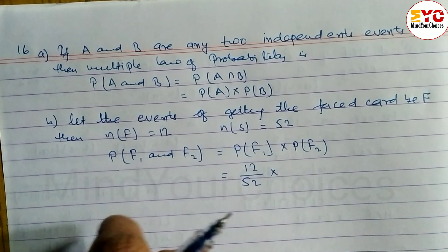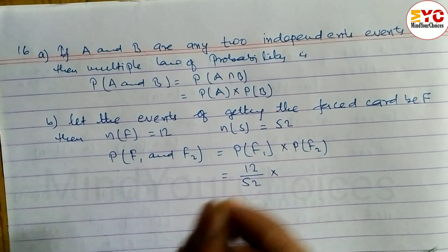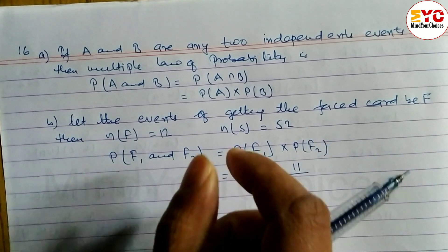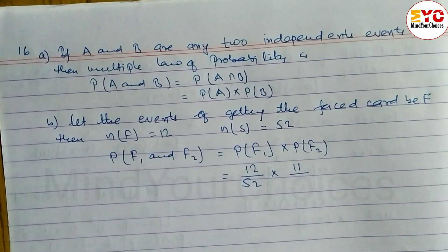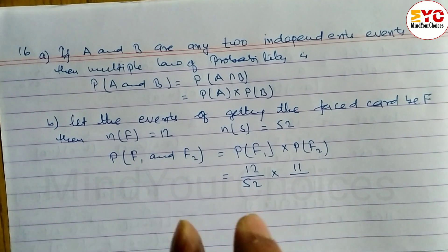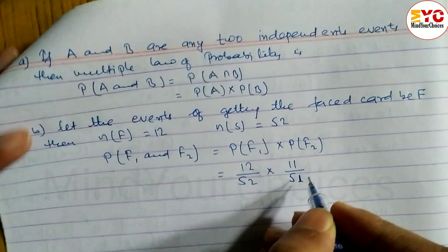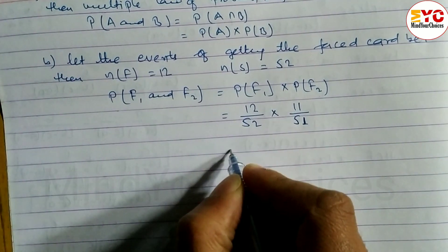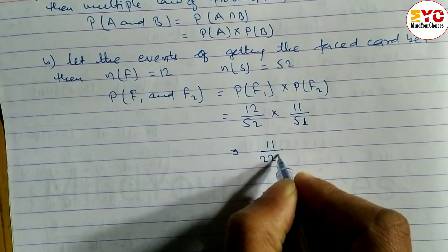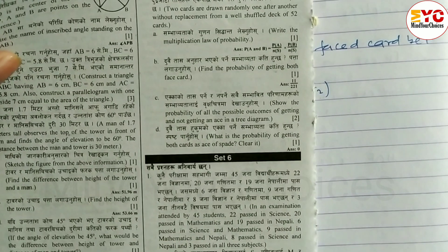Since the card is not replaced — without replacement — after the first face card is drawn, the number of face cards decreases to 11 and total cards decrease to 51. So the probability of getting the second face card is 11 by 51. Calculating this gives the answer 11 by 221.